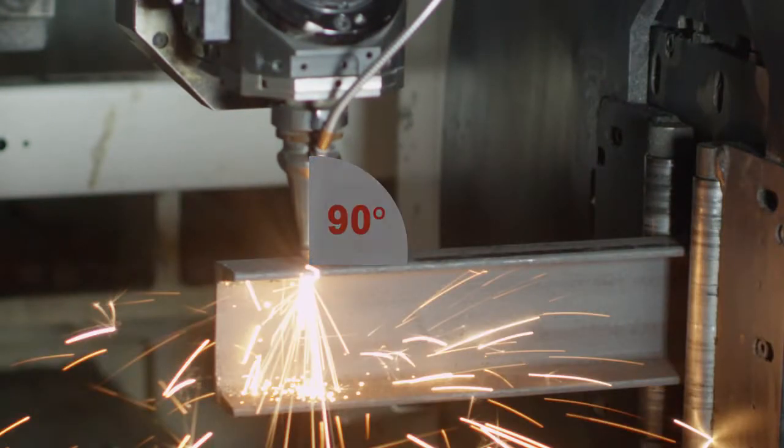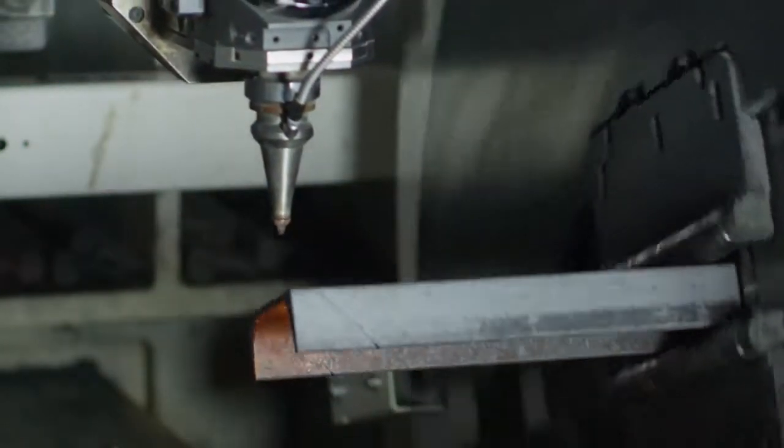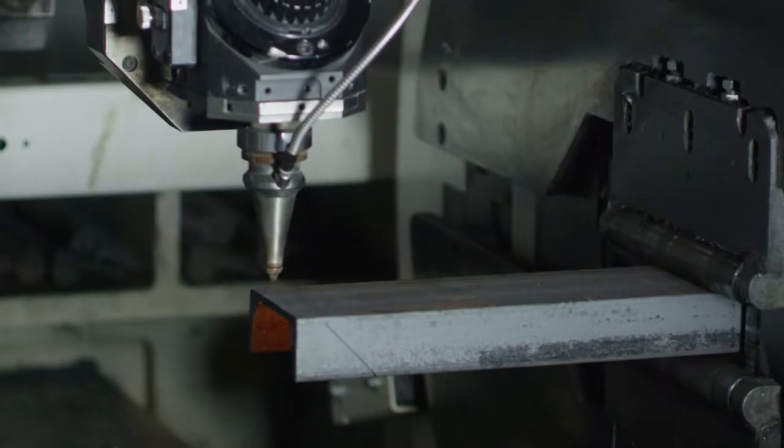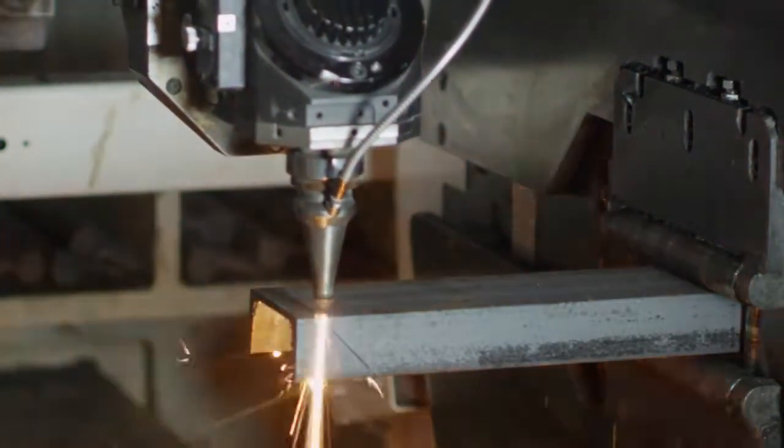As seen here, the channel is being cut quickly and efficiently using the normal to surface process because the head of the laser is positioned at 90 degrees from the surface of the web and flange of the piece.